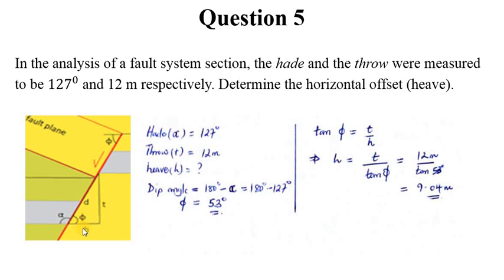We want to find that and this is basically now geometry. We forget about faulting and we get to geometry and solve this. So hade which is α is 127 degrees, throw t is 12 meters, what is h? Now we need to find this angle here, which is basically obtained from the difference between this and 180, because the total angle here along a straight line is 180. So what we call the dip angle is given by 180 minus the hade, so that we find 53.